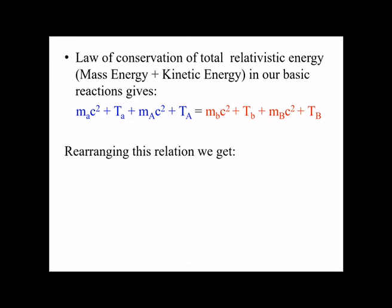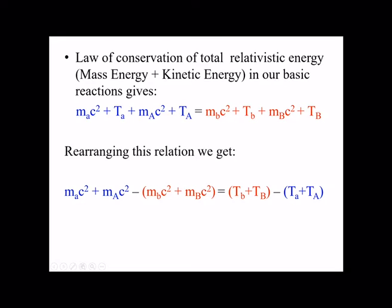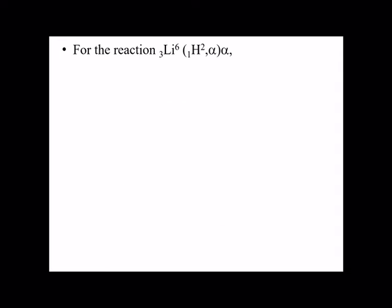Rearranging this relation, we can derive a simple expression for the Q value. Bringing the mass energy terms for the incident particles and target to one side, minus the mass energies of the product nuclei, gives us that Q equals the final kinetic energy minus the initial kinetic energy. This is the simple relation for finding the Q value.